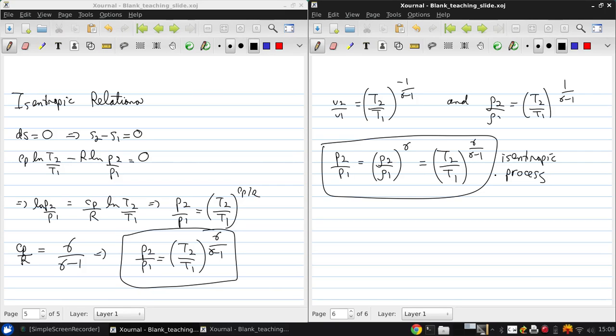Now, these isentropic relations are incredibly useful because a large number of compressible flow problems are nearly isentropic. Basically, the flow outside the boundary layers are isentropic. So these are useful relations that we use moving forward dealing with compressible flows.